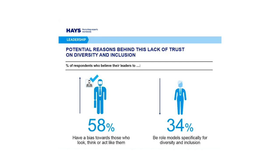We see bias in areas such as hiring, work allocation, feedback and progression, so their own experience tells them that decision making is biased and not fair. A second reason is that while organizational leaders often make positive noises about diversity and inclusion, minority groups see very little change happen, which only serves to exaggerate the trust deficit. So there are two reasons: the biases themselves, and a disconnect between the noise and the lived experience.